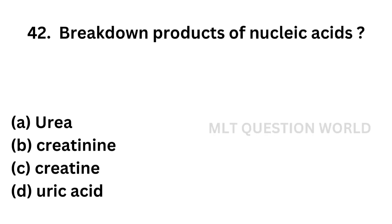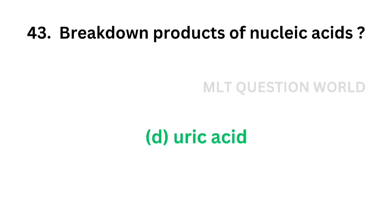Question number 42: What are the breakdown products of nucleic acids? Option A: urea, option B: creatinine, option C: creatine, option D: uric acid. The correct answer is option D, uric acid. Uric acid is the breakdown product of purine metabolism.